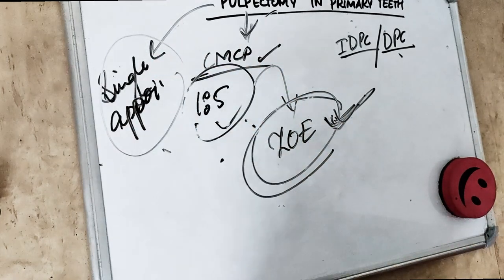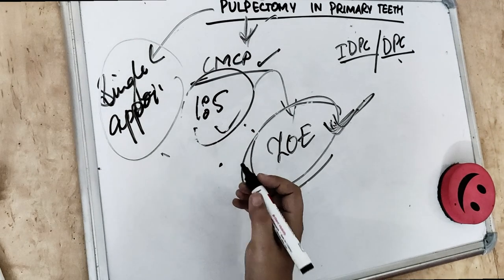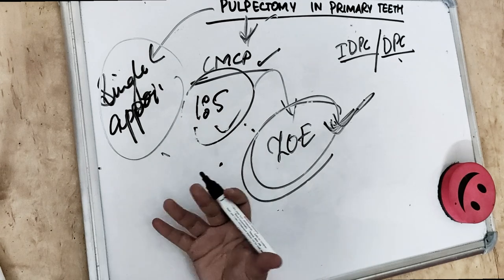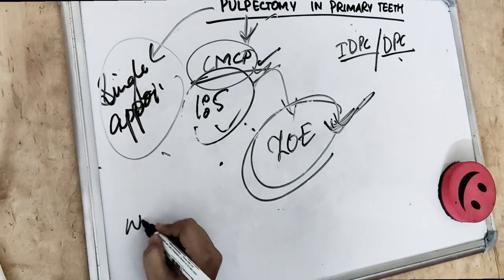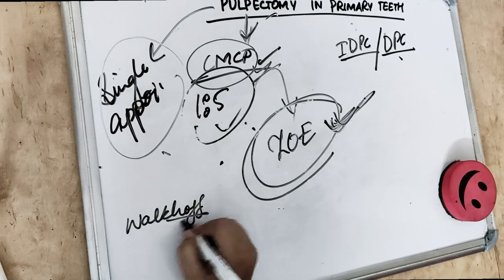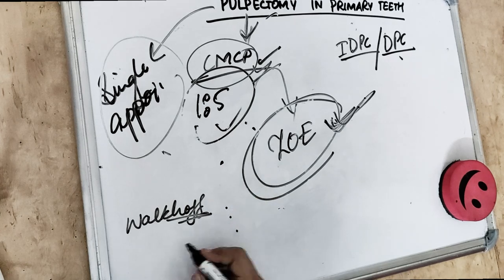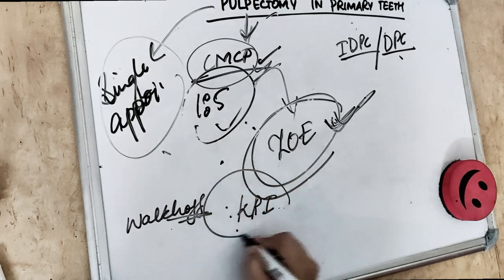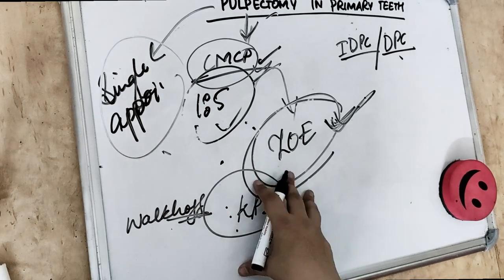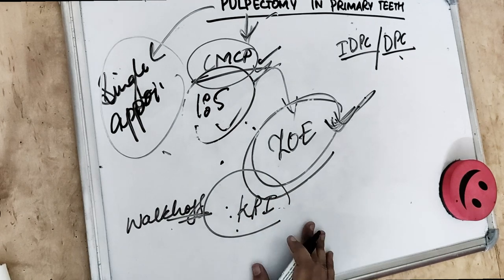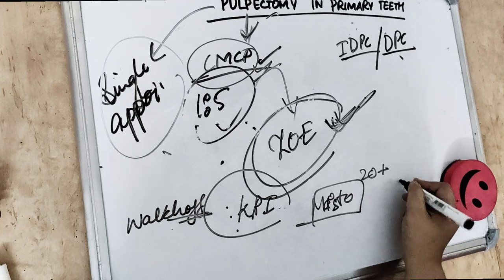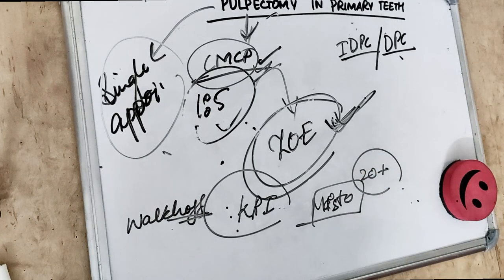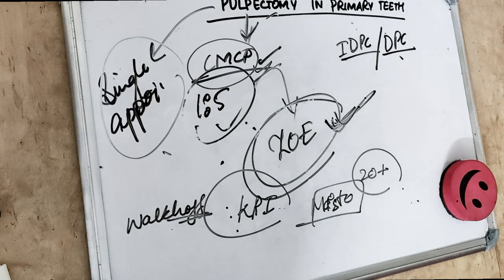For root canal filling materials in primary teeth, there are many agents available. The most common is CMCP paste. We also have Volkov's paste, which contains parachlorophenol, camphoroquinone, and menthol. There is KRI paste, which contains iodoform, camphor, parachlorophenol, and menthol. We also have Maisto paste, which contains zinc oxide, iodoform, thymol, and other agents. Other materials include Vitapex and Endoflas.